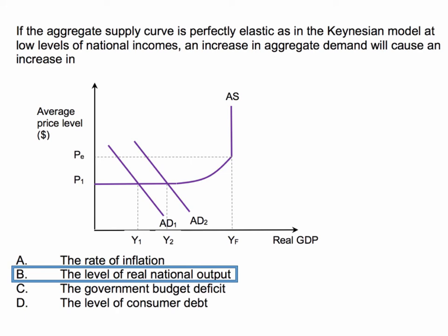It's not going to be C either. An increase in real national output will increase tax revenues for the government and perhaps reduce welfare benefits, so typically when a country is growing, the level of the fiscal deficit will go down.